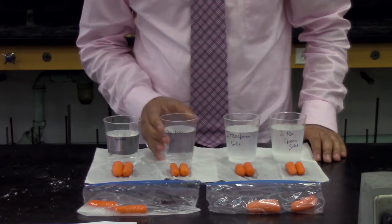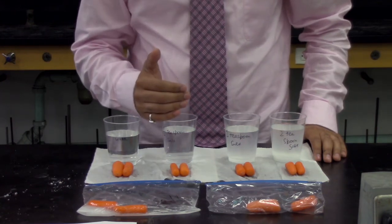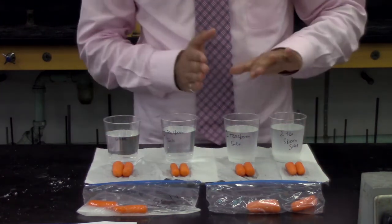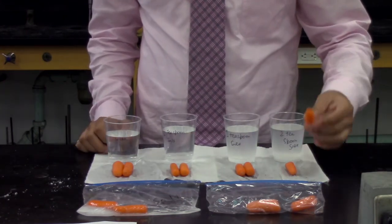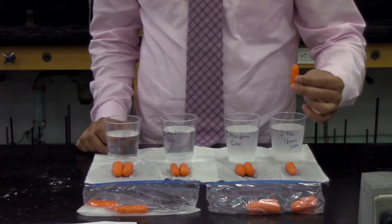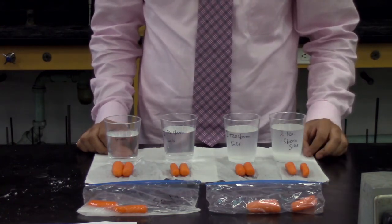Next, in the third and fourth cup the carrots are squishy and shrunken. This means that the carrots lost mass. Hence both solutions must have been hypertonic solutions.